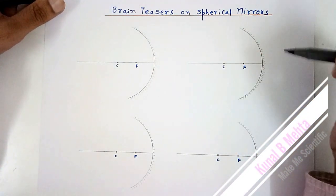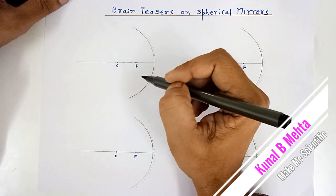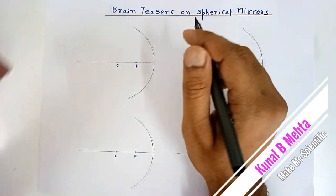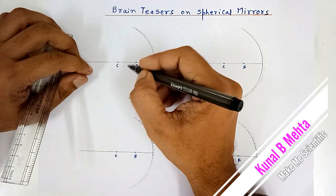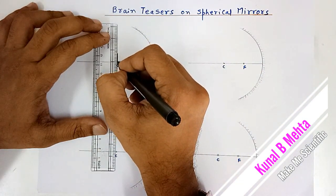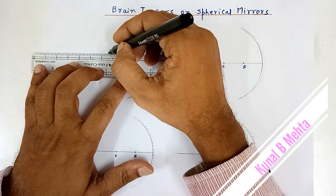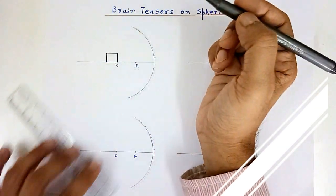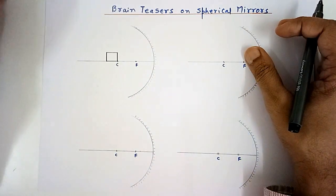So here we have all concave mirrors — 4 concave mirrors. We know that if we keep a linear object at different places, we get the image at different places: it may be real or virtual, in front of or behind the mirror. But today we are going to discuss 2-dimensional problem bodies. We had been discussing linear objects like an arrow or candle, but suppose you have something like a square or rectangular shape object.